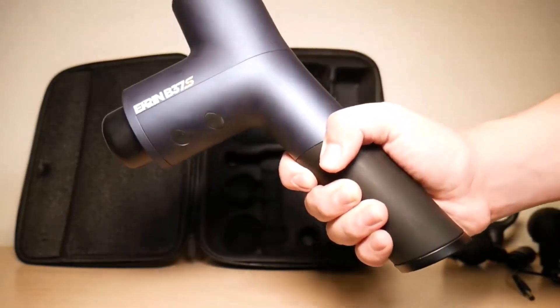Number 5. Theragun Pro Fifth Generation. It features a refined design that's 20% quieter, smaller, and slightly lighter than its predecessor. It retains key features like the adjustable head angle, 5 speeds, 150-minute battery life, 16-millimeter amplitude, and 60 pounds of pressure.